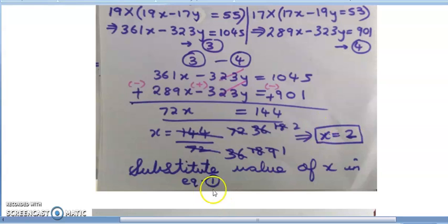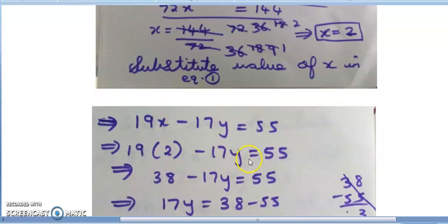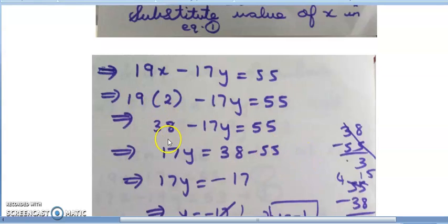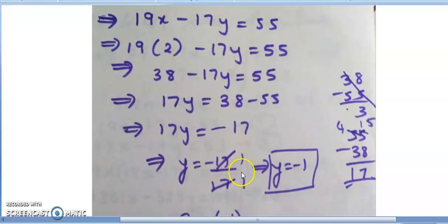So x equals 2. Now substitute the value of x in equation 1: 19×2 - 17y = 55. So 38 - 17y = 55. Therefore 17y = 38 - 55 = -17. So y = -17/17 = -1.